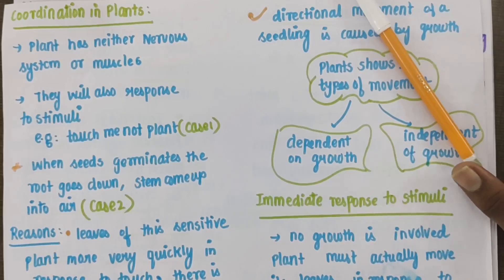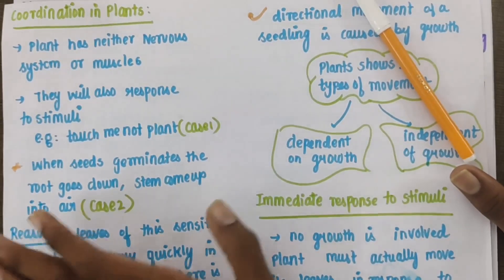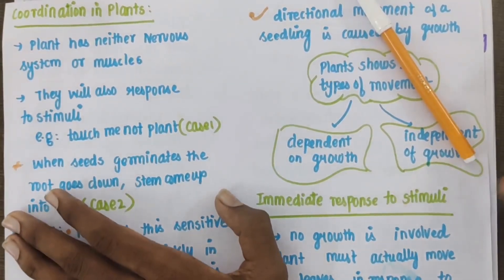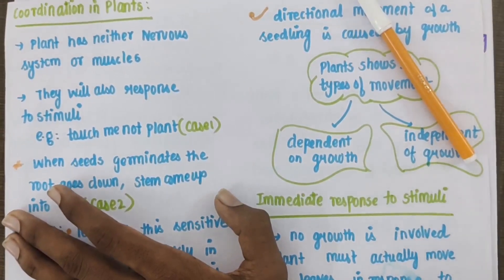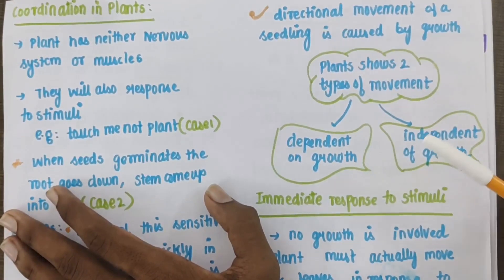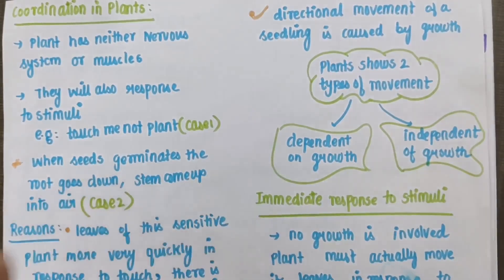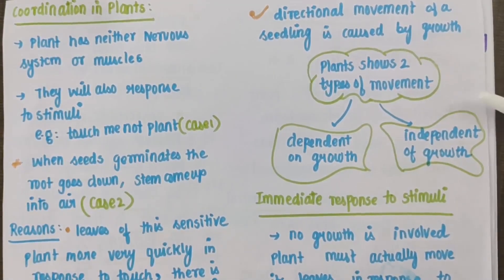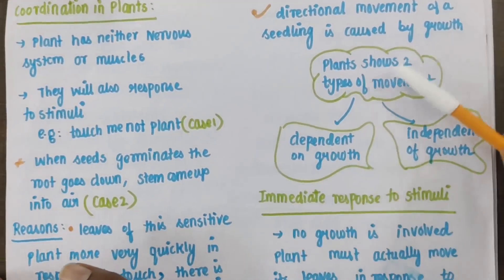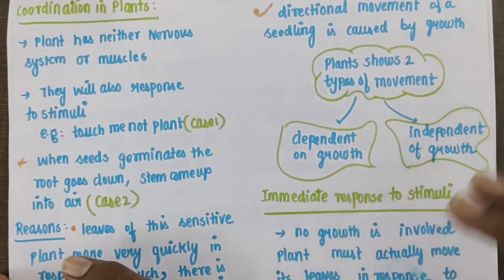We have given notes for all the chapters, chapter-wise, on the Telegram channel. Do not forget to check out the link in the description box and go get the notes. Physics and chemistry portions are already complete. For biology, if you want any chapter link, just ask me in the comment section and I will immediately give you the link so you can complete the lecture and get good marks in your exam.